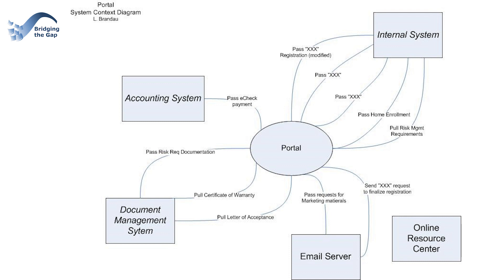Next are the integrated systems. Each rectangular box represents a system which has an integration point with the new core system. The actual names of these systems in this example have been replaced with generic system names for confidentiality reasons. For example, the accounting system — it could have been QuickBooks, FreshBooks, or Great Plains, like any accounting system. You would use your specific systems when you create this.